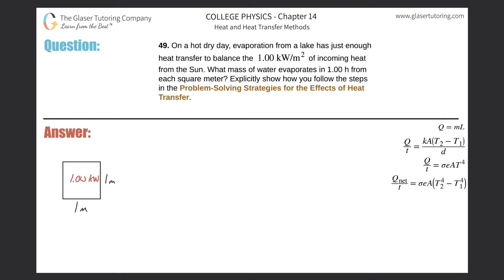Number 49: On a hot dry day, evaporation from a lake has just enough heat transfer to balance the 1.00 kW/m² of incoming heat from the sun. What mass of water evaporates in one hour from each square meter? Okay, so here we have a square meter, and per square meter they say the incoming rate of heat is one kilowatt per square meter.